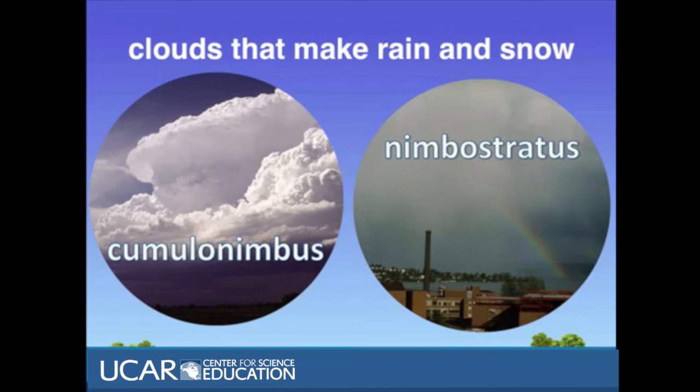Nimbostratus clouds are dark gray and cause the type of rainstorm that's calm and gloomy, where soft rain falls without wind or lightning.